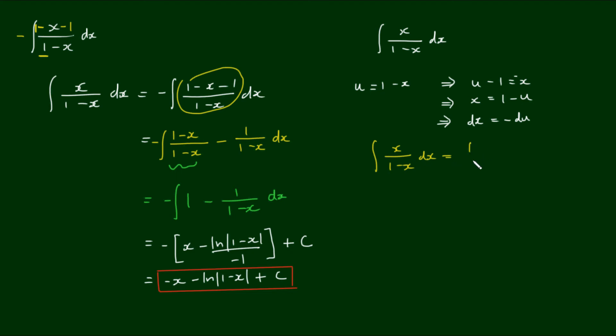1 minus u over u. And of course dx is substituted by negative du. We take this negative into the numerator and we get the integral of u minus 1 on u du. And if we simplify that, we have 1 minus the integral of 1 on u du.